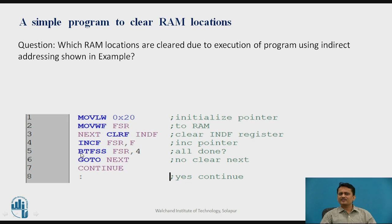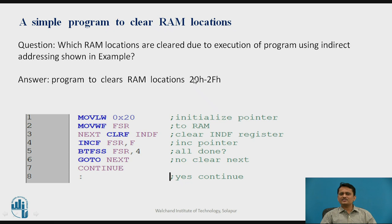When bit number 4 of FSR becomes 1, the program exits the loop and continues with the next program. The program keeps clearing address locations 20h, 21h, 22h, and so on. The answer is: this program clears locations 20h to 2Fh, because at 2Fh the lower nibble is 1111, and after incrementing, bit 4 becomes 1 and you exit the loop. This shows how indirect addressing is used with FSR as the actual pointer register.